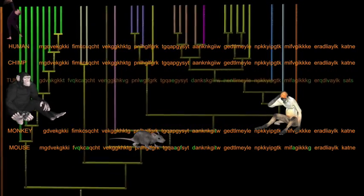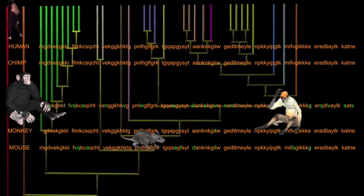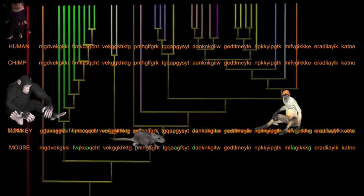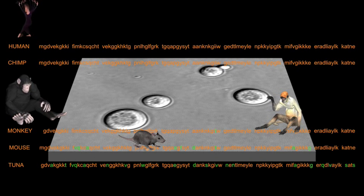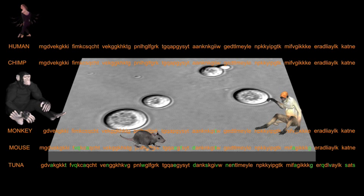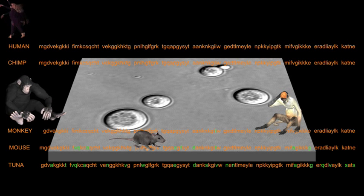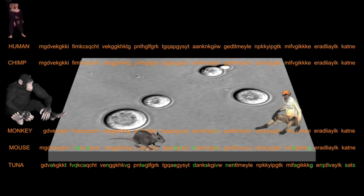The differences increase as we step further back in time and further from our own branch on the tree of life. The yeast itself has 51 amino acid differences from that of humans and chimps, and is one of the most distantly related organisms from humans, having separated from our branch over a billion years ago.